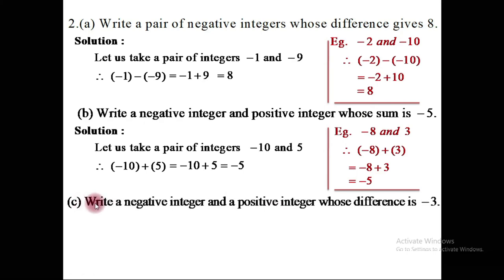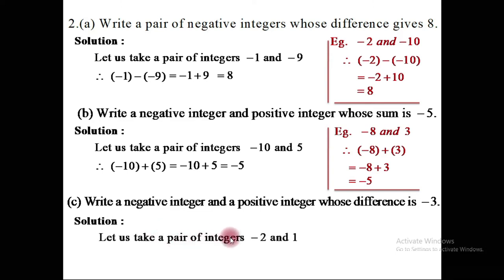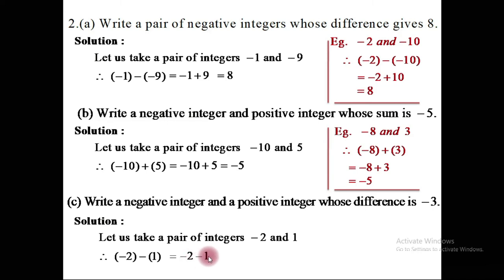Part c: write a negative integer and a positive integer whose difference is minus 3. Taking a pair of opposite-sign integers: minus 2 and plus 1. Taking the difference of minus 2 and plus 1 means subtracting the second integer from the first: minus 2 subtract plus 1. Removing brackets gives minus 2 and minus 1. Both integers now have the same sign, so they are added: 2 plus 1 is 3, taking the common sign minus, giving minus 3.